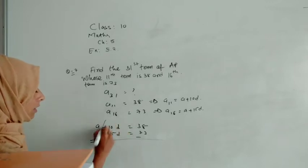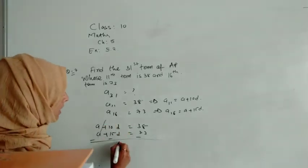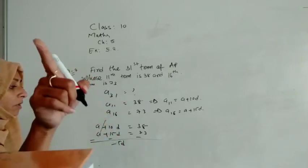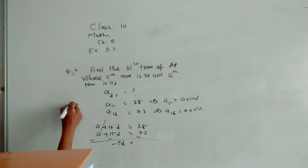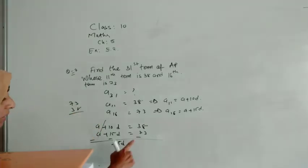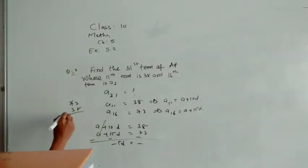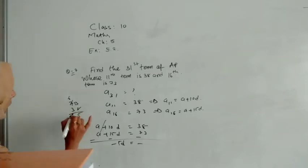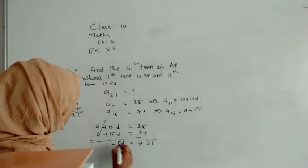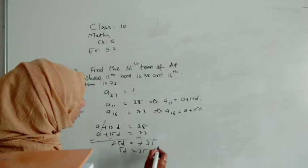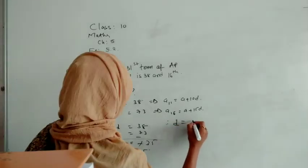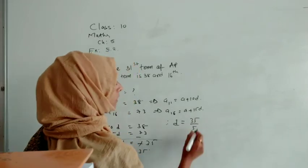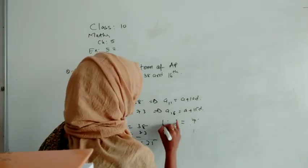Here we will perform elimination method. A will cancel. Minus 15d plus 10d means minus 5d, and this symbol of the greater number will be minus. Now 73 minus 38 we will do, but symbol of the greater number is minus, so our answer will be minus. So it will become minus 35. Minus minus will cut out. 5d equals 35, so d we are getting as 35 by 5. So d we are getting as 7.